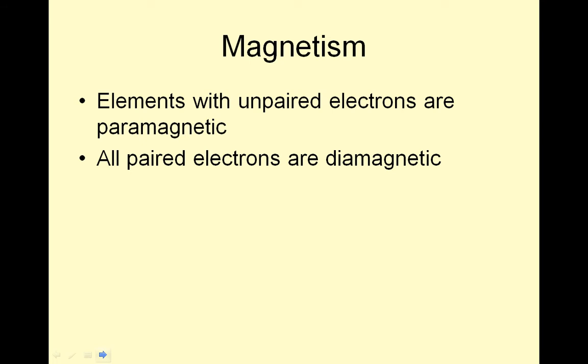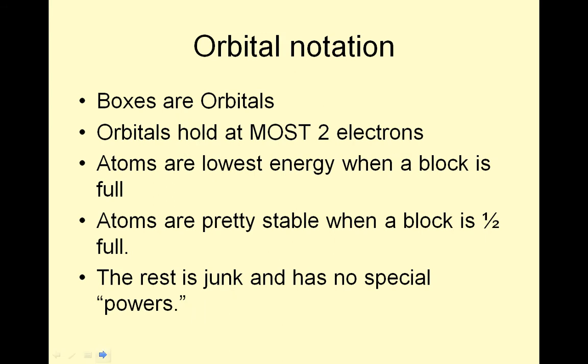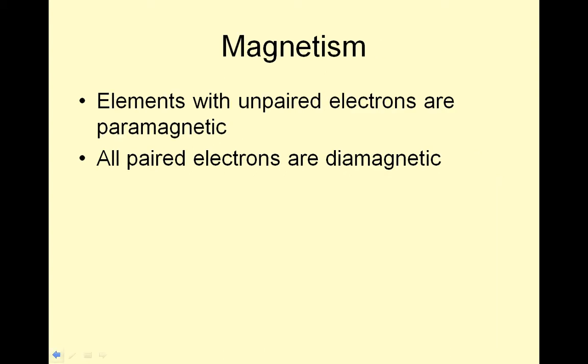Magnetism. Elements with unpaired electrons are paramagnetic. All paired electrons are diamagnetic, and I put this slide in the wrong spot. It should have gone after this one. Boxes are orbitals. Orbitals hold at most 2 electrons. So we're going to show this in the box notation. Atoms are lowest energy when a block is full. Atoms are pretty stable when a block is half full. The rest is junk and has no special stability. Elements with unpaired electrons are called paramagnetic. Paired electrons are called diamagnetic, and you need to know those.